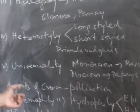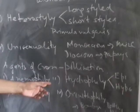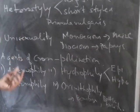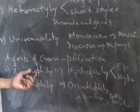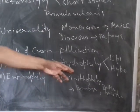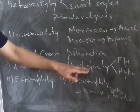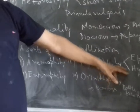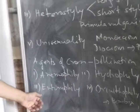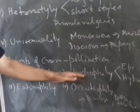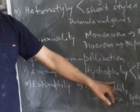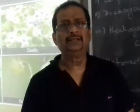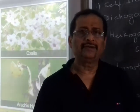Regarding agents of pollination: anemophily is pollination by wind — rice and wheat are examples. Hydrophily is pollination in water; epihydrophily occurs above water (e.g., lotus), and hypohydrophily occurs below water — examples include Vallisneria and Zostera. Entomophily refers to insect-pollinated flowers. Thank you for this class; if you have any questions, please ask.